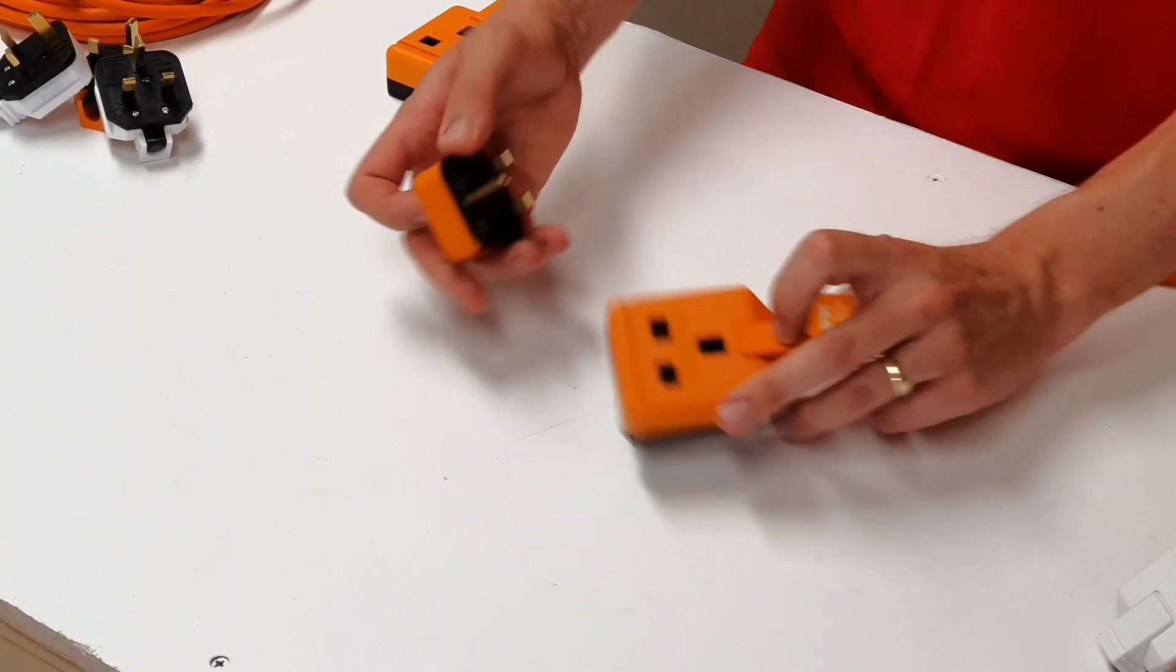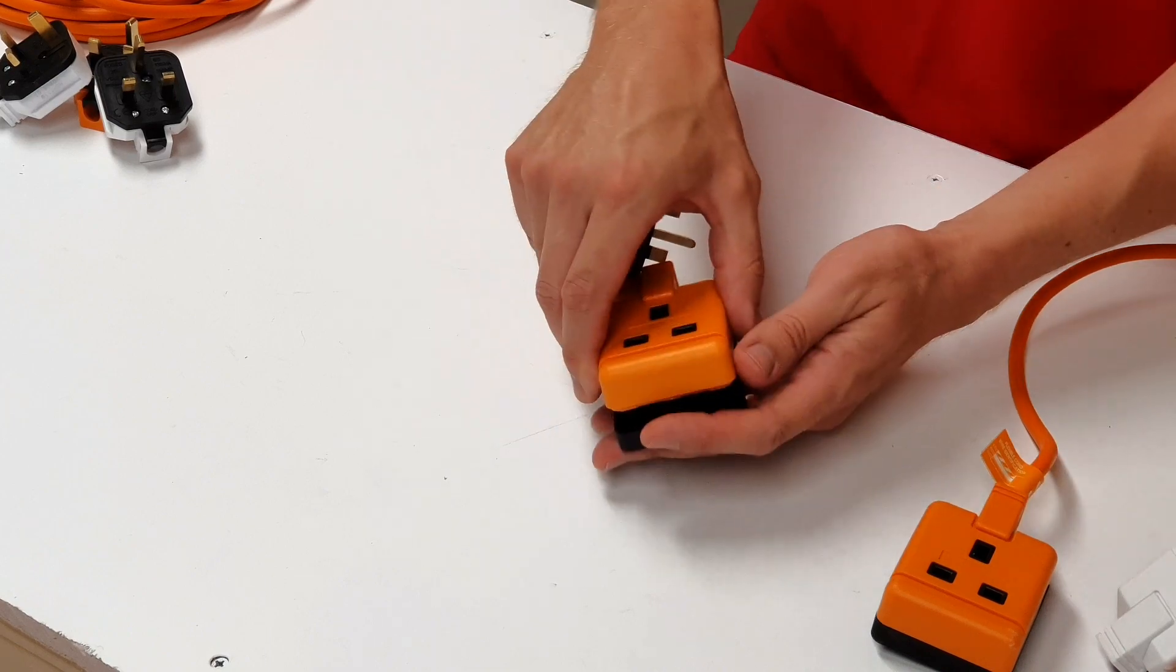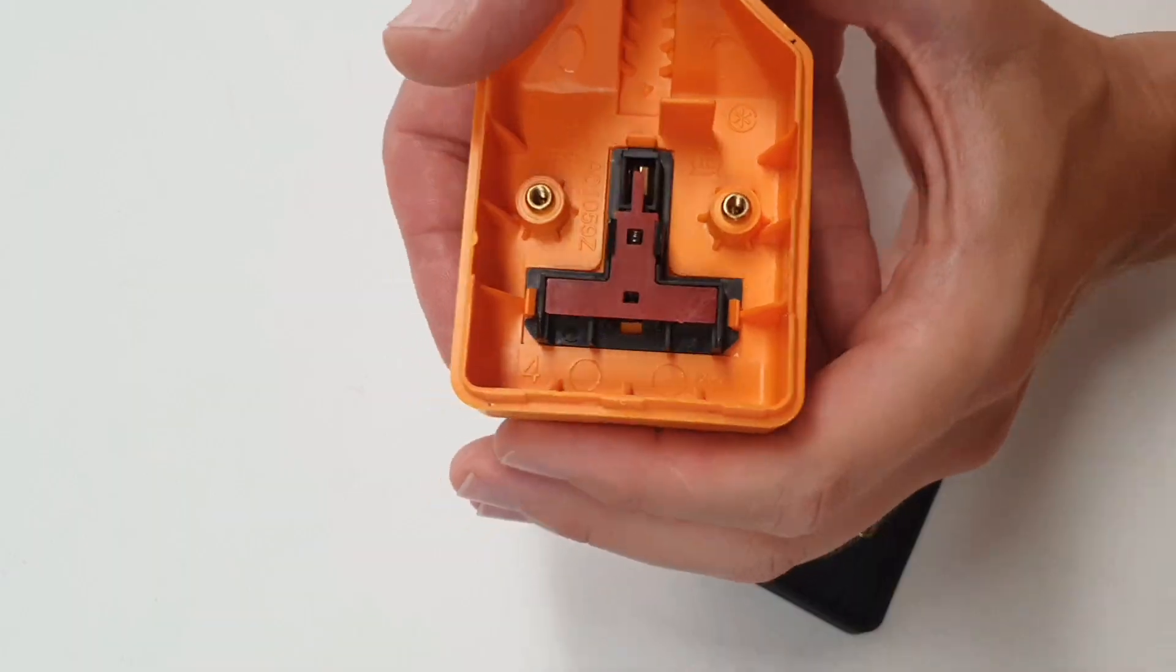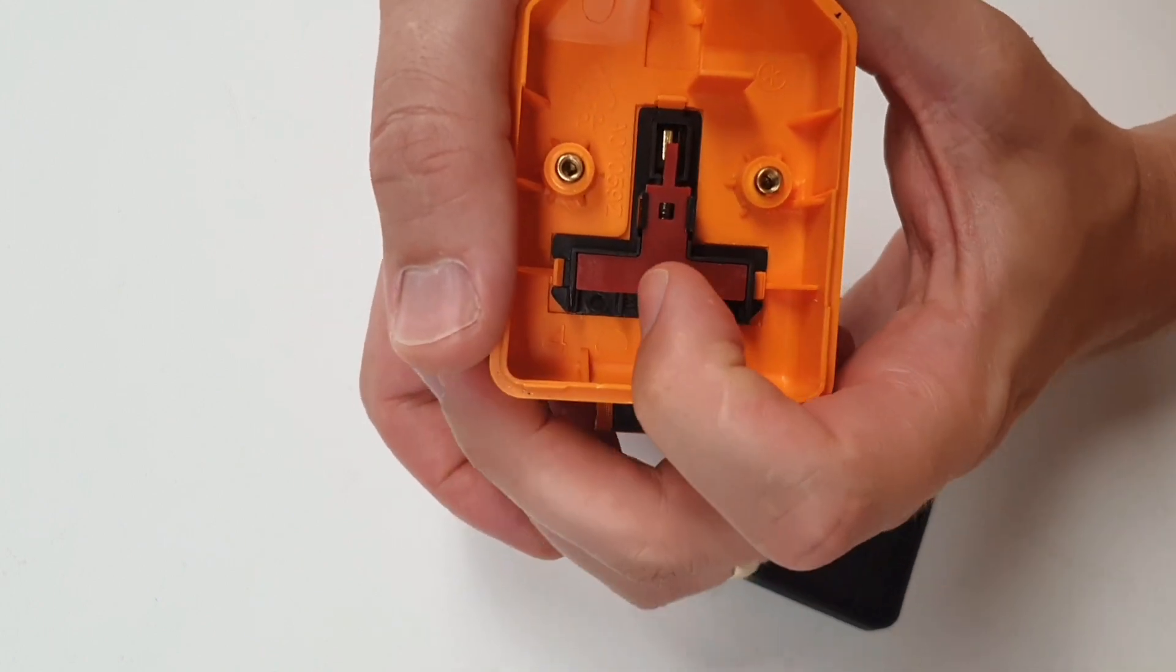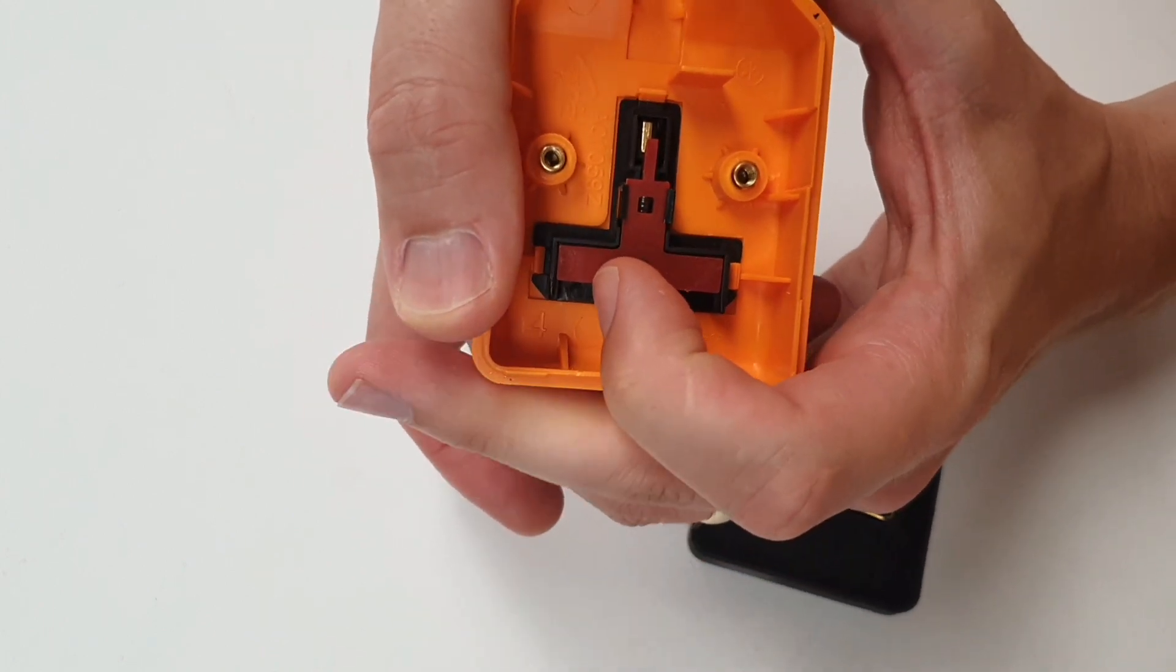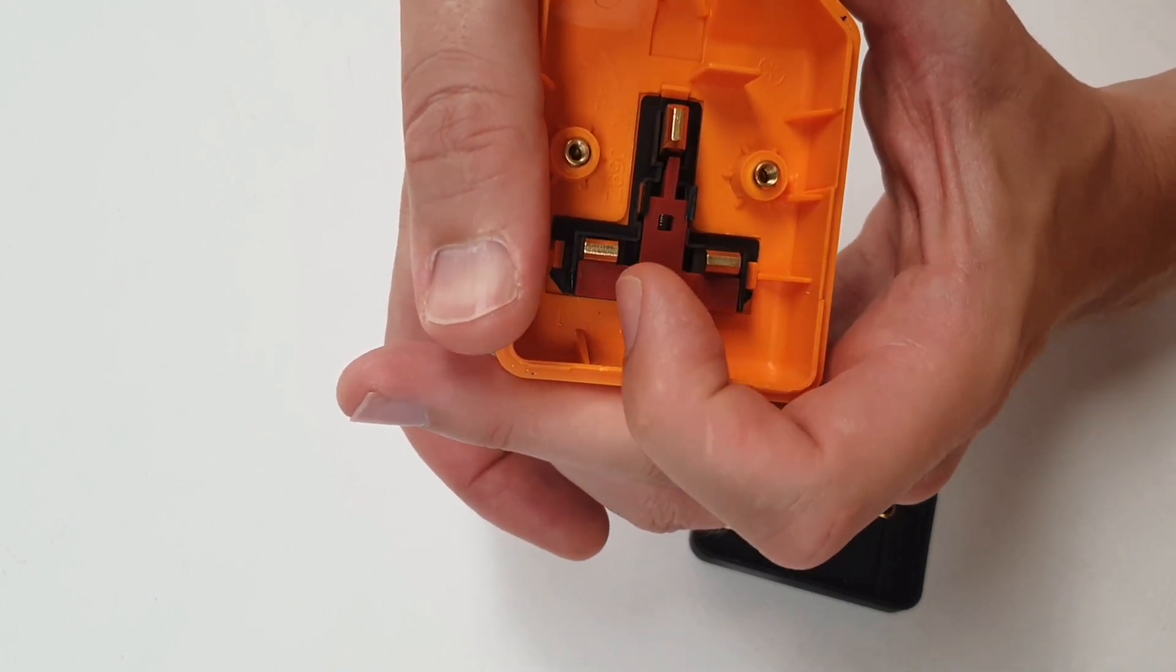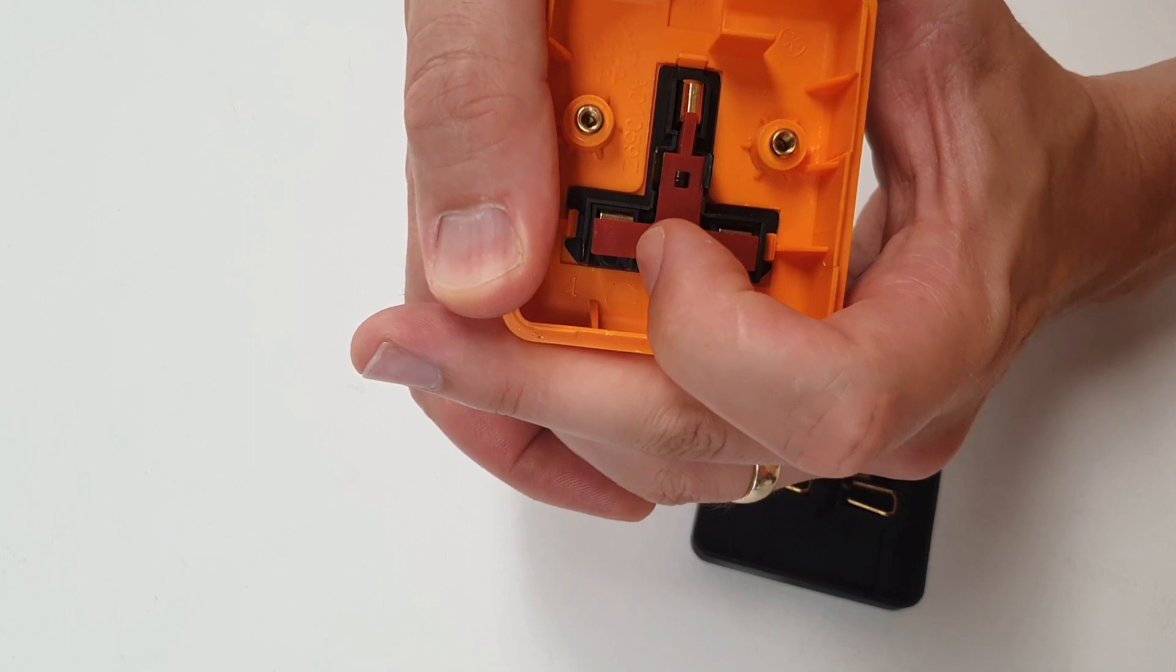Now it's quite hard to see that in action from here. So if I just take this one and turn it around, you can see the action taking place. There goes the earth pin. As I plug that in there, you can see that it actually opens the shutters up and allows the line and neutral pins to make their contact.